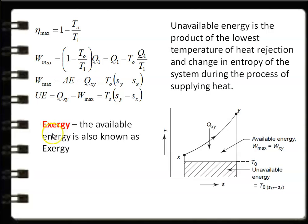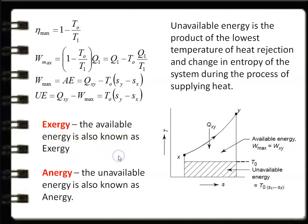The available energy is also known as exergy, and the unavailable energy is also known as anergy. So these are the two terminologies: available energy, availability — all these are referred to as exergy. It is a new term for available energy.